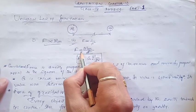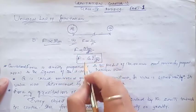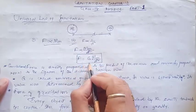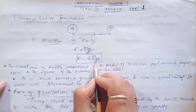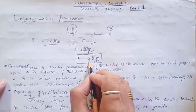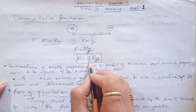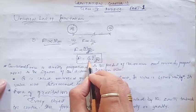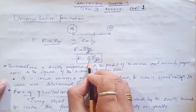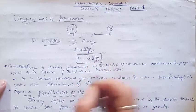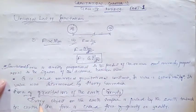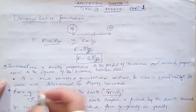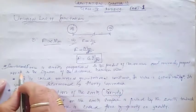If we replace the proportionality sign with an equal sign, we get the equation: F equals G times Mm divided by d square. This capital G is called the Universal Gravitational Constant. Here is the formal definition of Newton's Universal Law of Gravitation: gravitational force is directly proportional to the product of the masses and inversely proportional to the square of the distance between them.